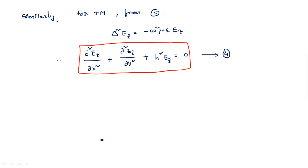Finally, what you are going to do is calculate the wave equations — that is, find expressions for Ex, Ey, Hx, and Hy. The electric field in the x direction has one equation, and the electric field in the y direction has another. These four equations will be calculated using the two wave equations, equations 3 and 4. I will continue these derivations in the next video. Thank you.